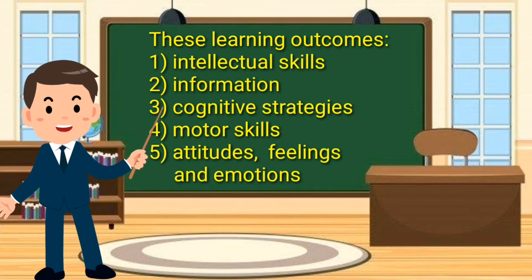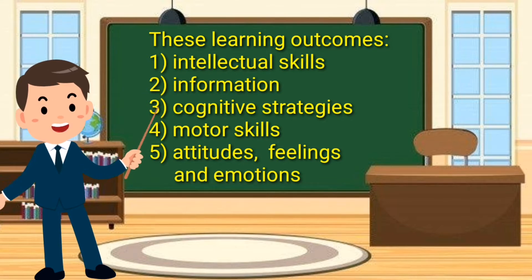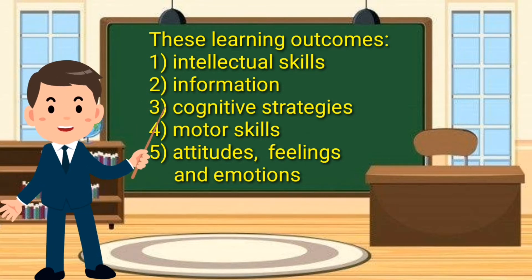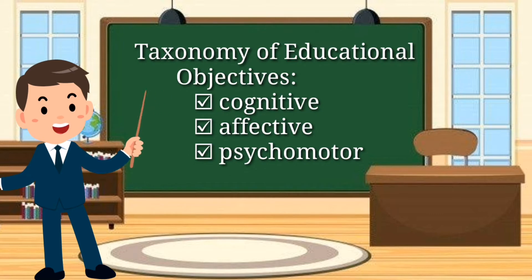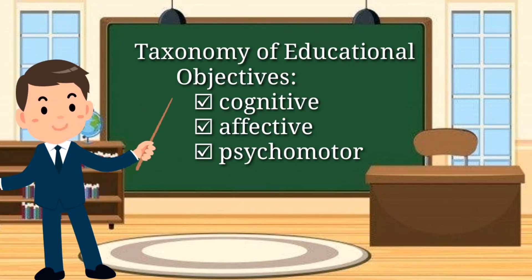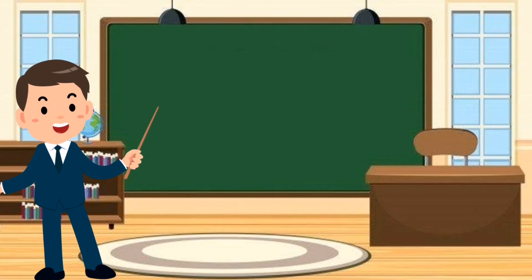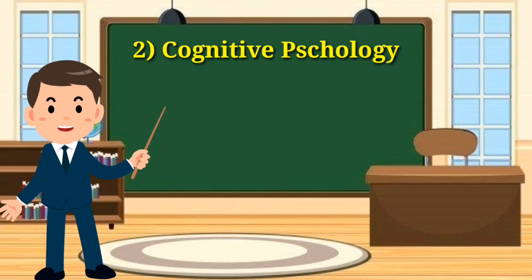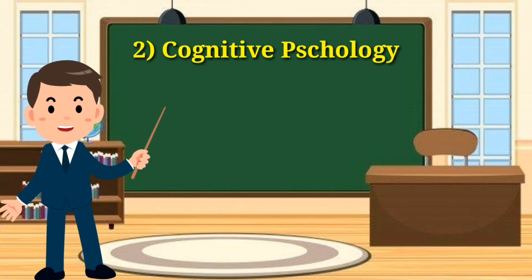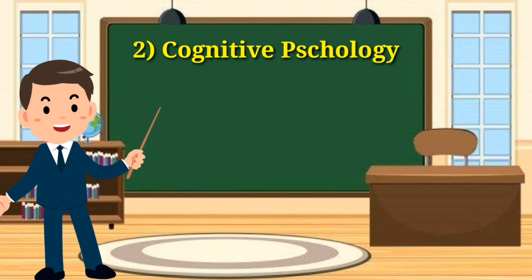Number five is attitudes, feelings, and emotions learned through experiences. These listed learning outcomes overlap with the domains in the taxonomy of educational objectives, which are the cognitive, affective, and psychomotor. The second theory related to the psychological foundation of education is cognitive psychology.